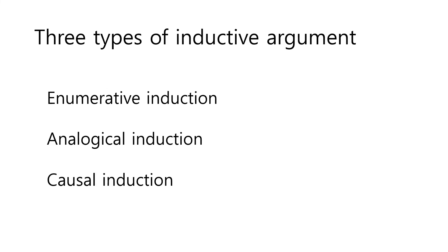In this module, we want to study three different types of inductive argument. The first we're going to study is enumerative induction. The second, analogical induction. And finally, causal induction. Now these three different types of induction use inductive logic and reasoning, but they have very different structure and really different ways to analyze and evaluate them. So after this, you can move on to the enumerative induction video.